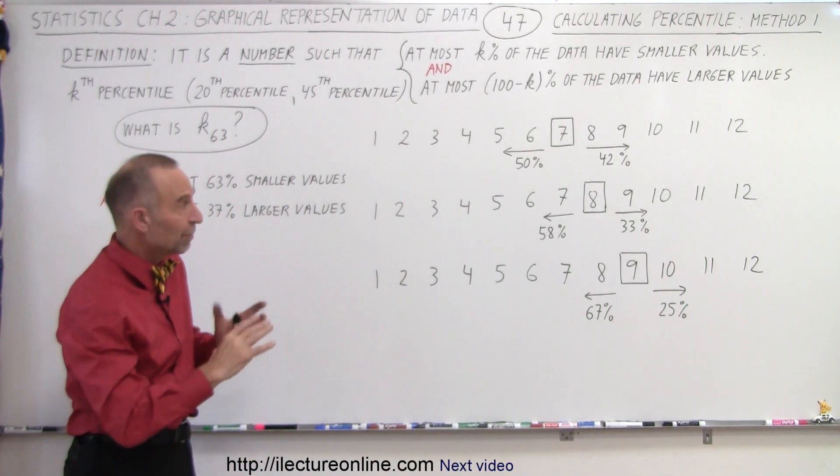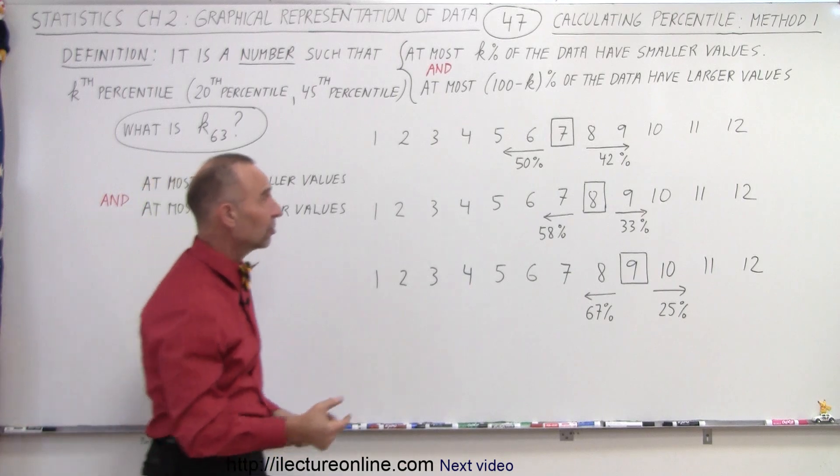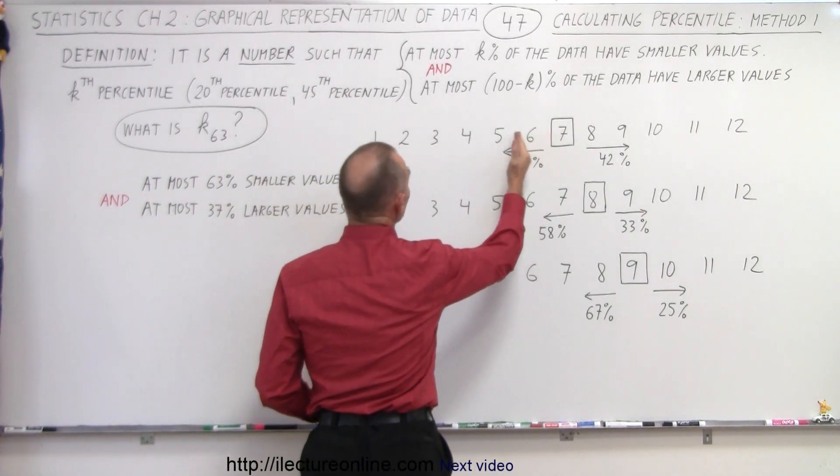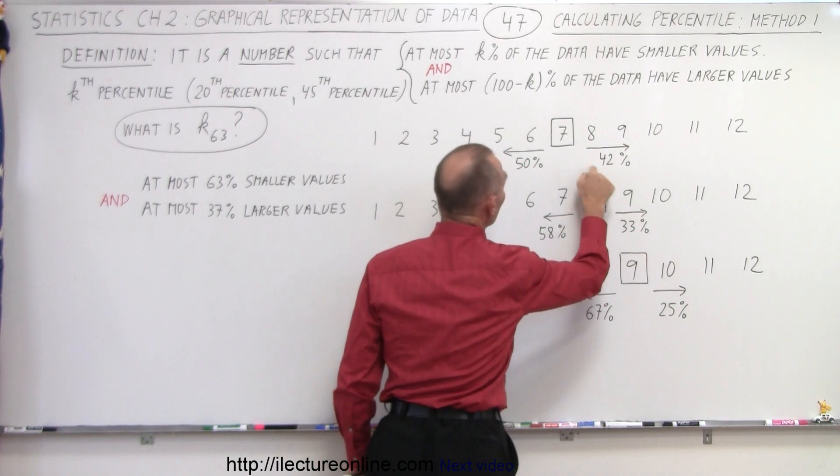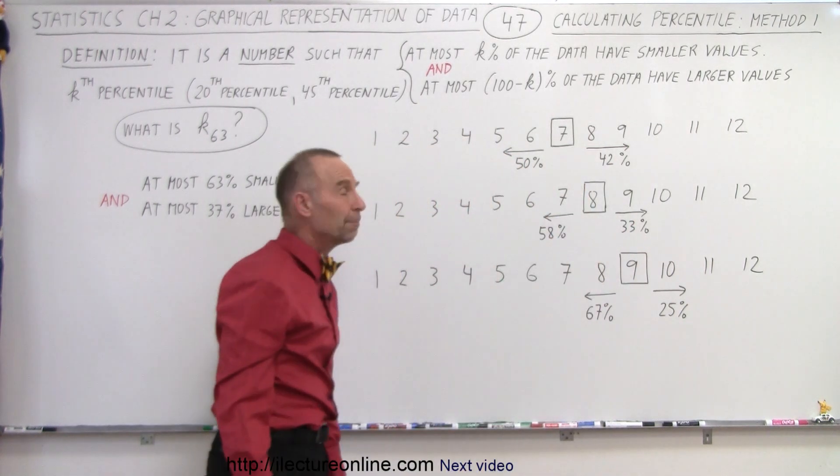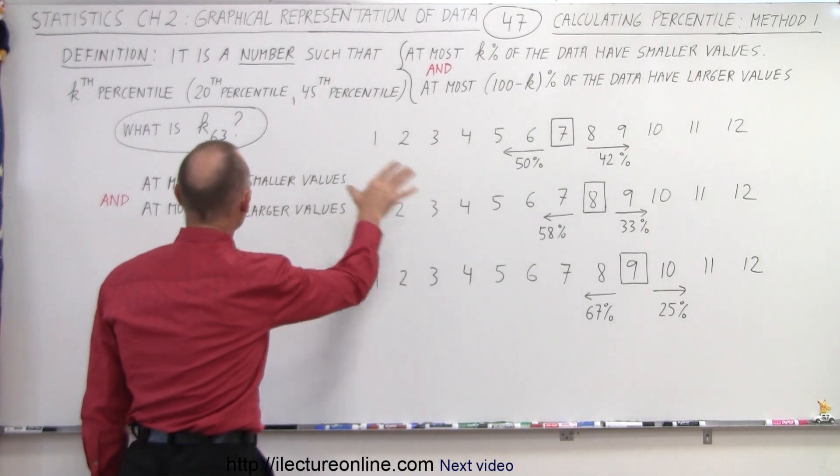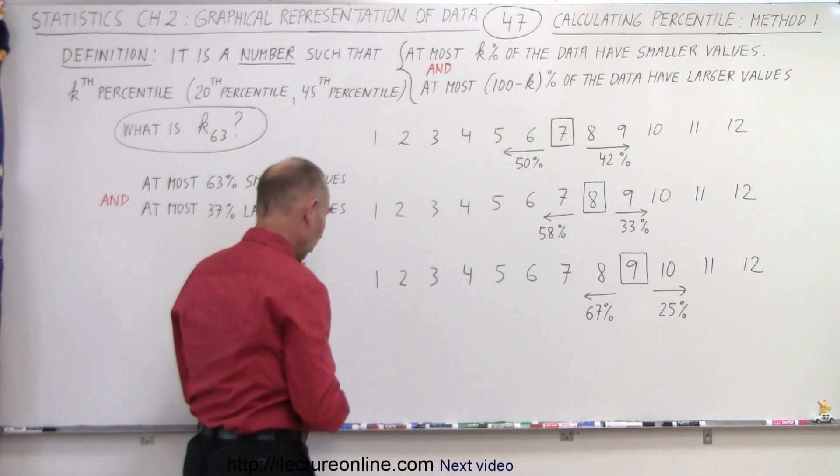So what I've done already beforehand to make it a little bit easier and faster, I've calculated the number of data points to the left and the number of data points to the right in percentage relative to the point that I picked. And then we'll see whether or not they meet the conditions that we're looking for.